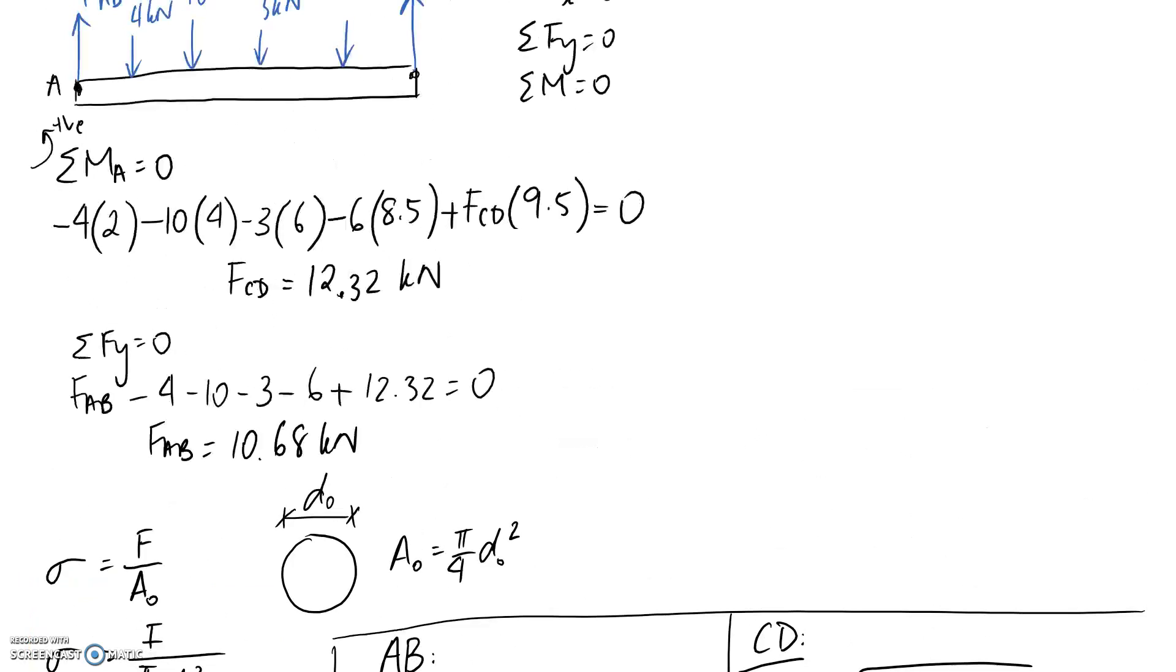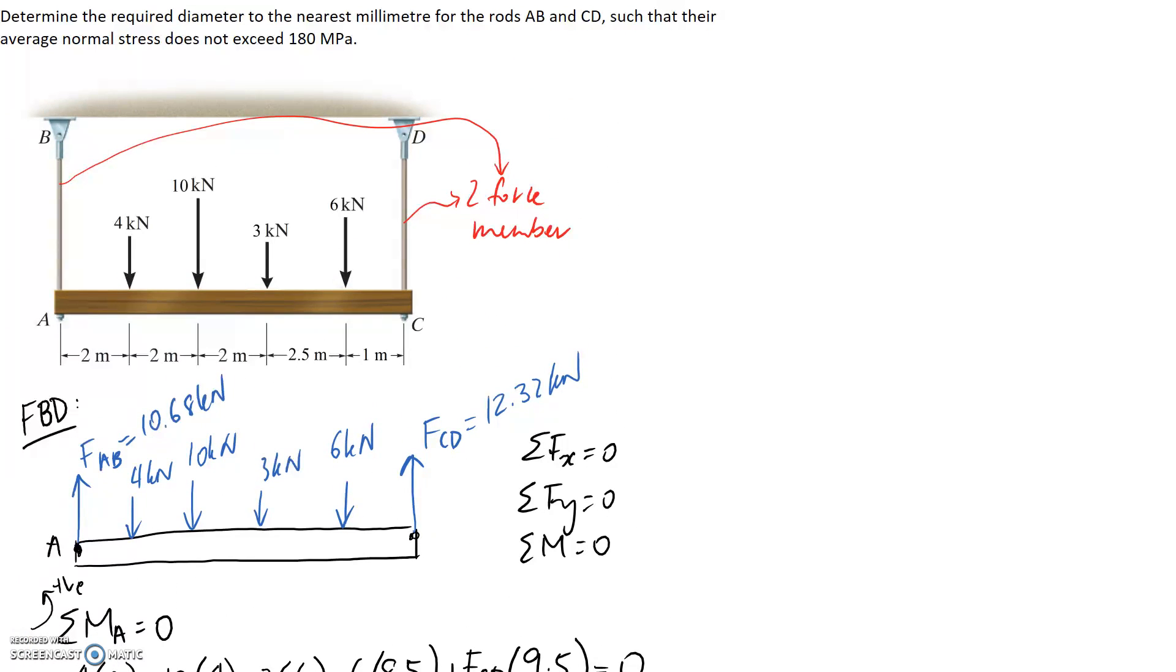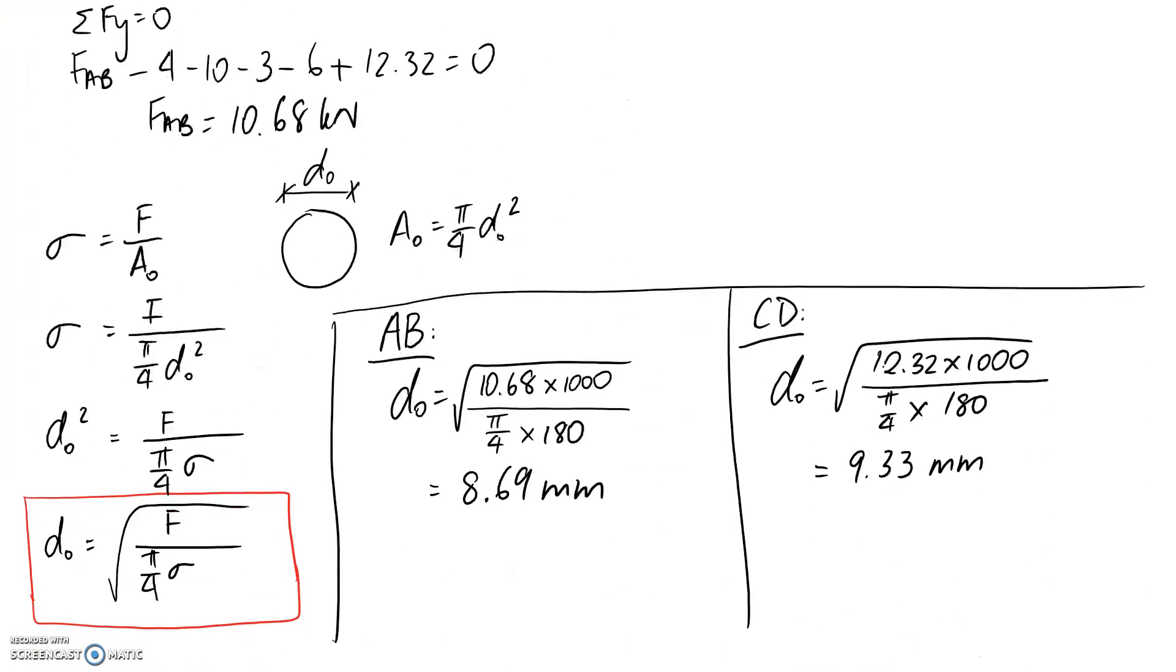The question wanted us to determine the required diameter to the nearest millimeter, so we need to round our answer. The trick is we're going to want to round up, because this is the absolute minimum we can do. If we round down to 8 millimeters, we would exceed our stress limit of 180. So the answer for AB is 9 millimeters. Same with CD - if we round down to 9 millimeters we'll exceed the stress limit, but if we round up to 10 we reduce the stress experienced in our wire. So the answer is 10 millimeters.